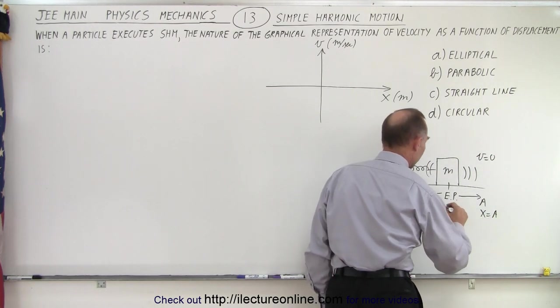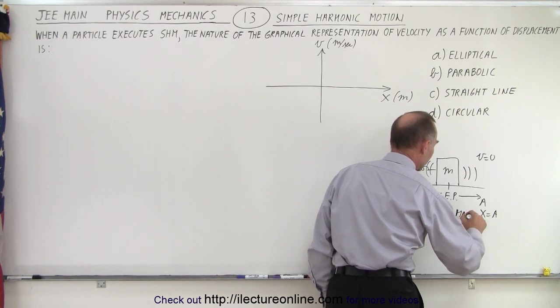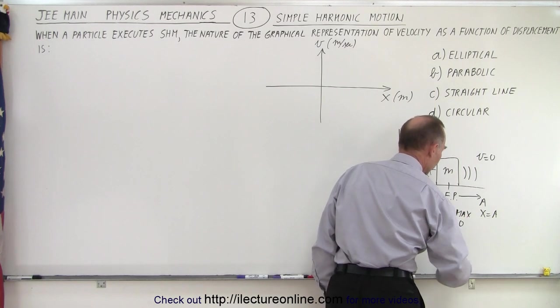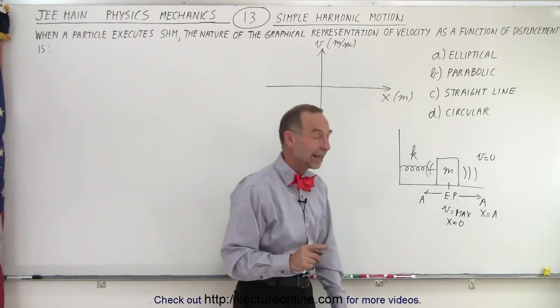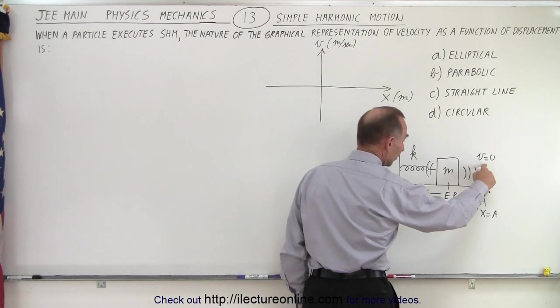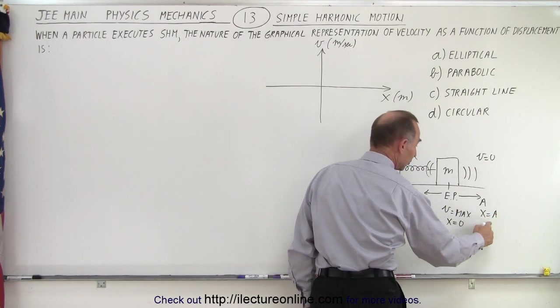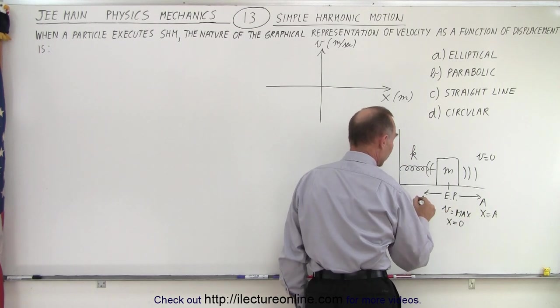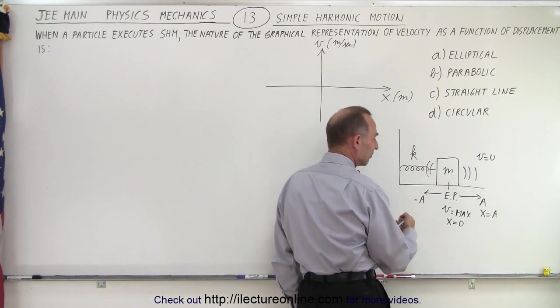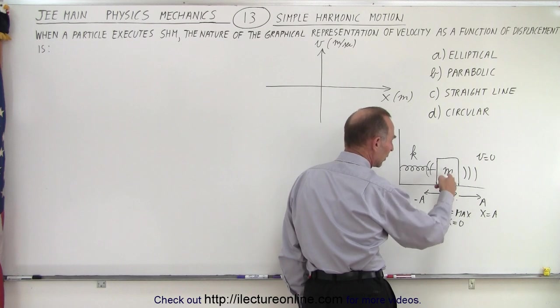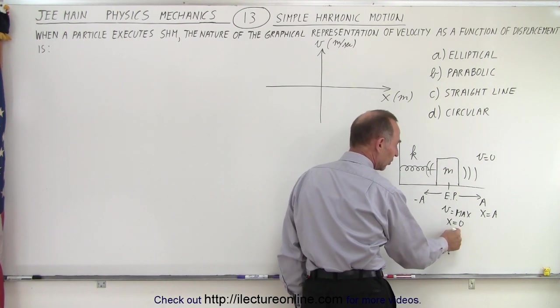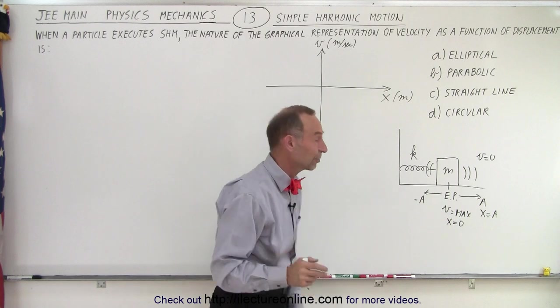At the equilibrium point, velocity equals the maximum, and x equals zero. So we can see that when velocity is zero, we have reached the maximum amplitude, and when we're at the equilibrium point, when the position is zero, the velocity reaches its maximum.